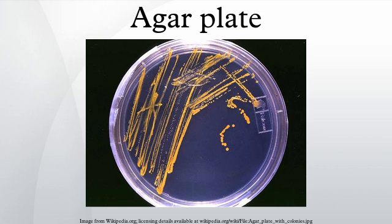In this technique, a drop of the culture on the end of a thin, sterile loop of wire — sometimes known as an inoculator — is streaked across the surface of the agar leaving organisms behind, a higher number at the beginning of the streak and a lower number at the end. At some point during a successful streak, the number of organisms deposited will be such that distinct individual colonies will grow in that area, which may be removed for further culturing using another sterile loop.